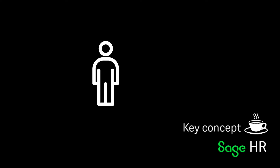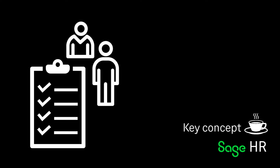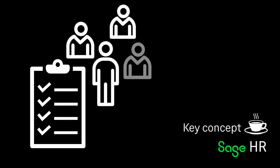You can organize your onboarding process by assigning a predefined task list to new employees, their manager, or another employee who needs to support the process. This ensures that no important actions are missed out and progress can be tracked.